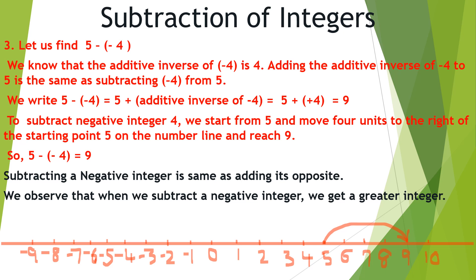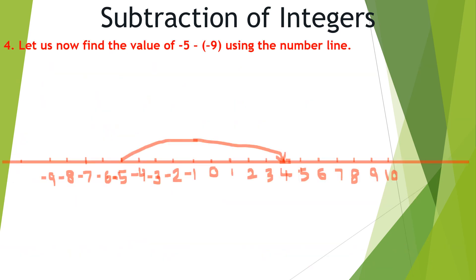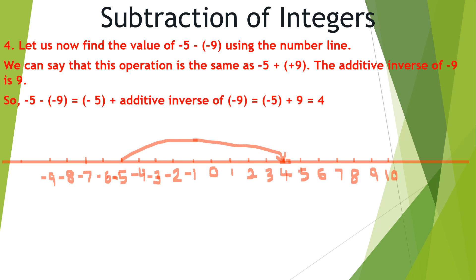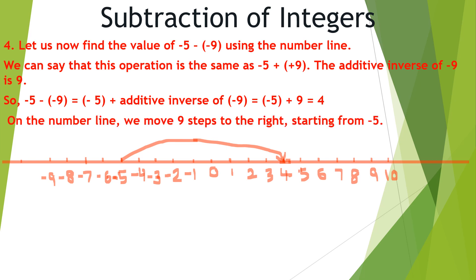So 5 minus minus 4 is equal to 9. Subtracting a negative integer is the same as adding its opposite. We observe that when we subtract a negative integer, we get a greater integer. Let us now find the value of minus 5 minus minus 9 using the number line. This operation is the same as minus 5 plus 9 because the additive inverse of minus 9 is 9. So minus 5 minus minus 9 equals minus 5 plus 9, which equals 4. On the number line, we move 9 steps to the right starting from negative 5 and reach 4.